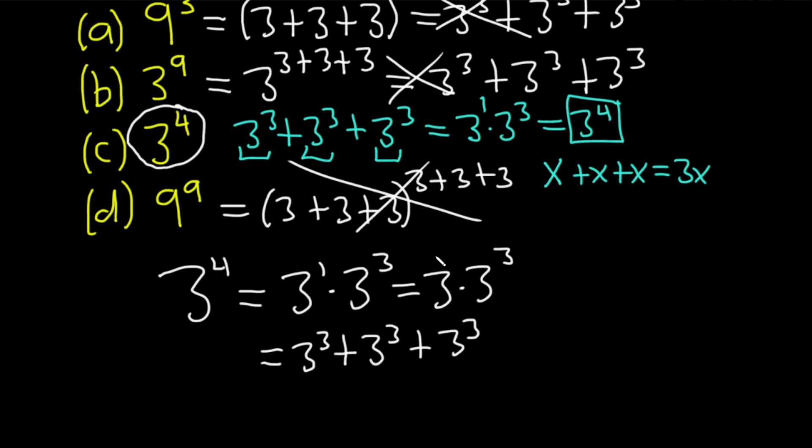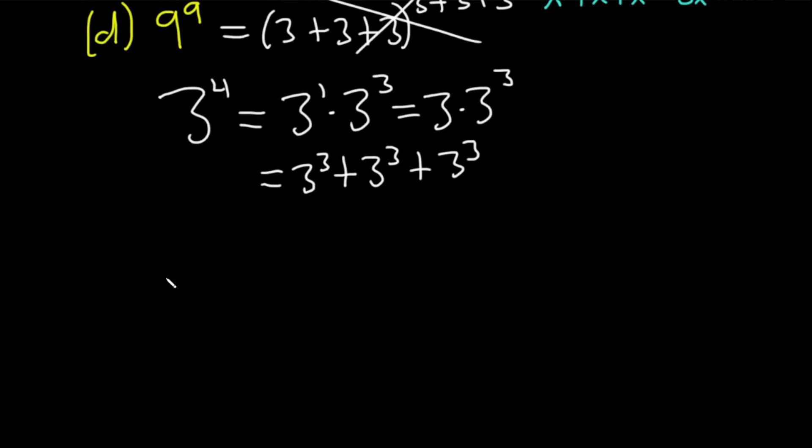Another way to do it, okay, another way to do it is to look at the original question, which was 3 cubed plus 3 cubed plus 3 cubed. And you could just say, okay, 3 cubed is 27. This actually just occurred to me right now.